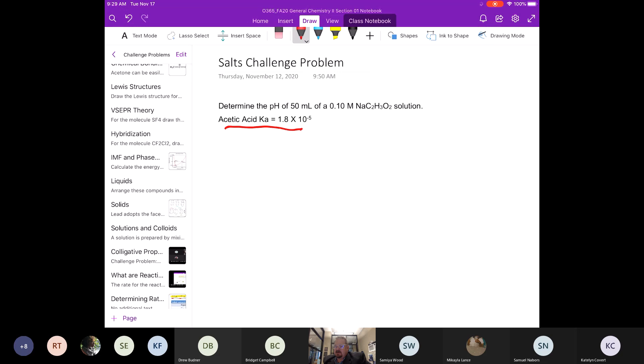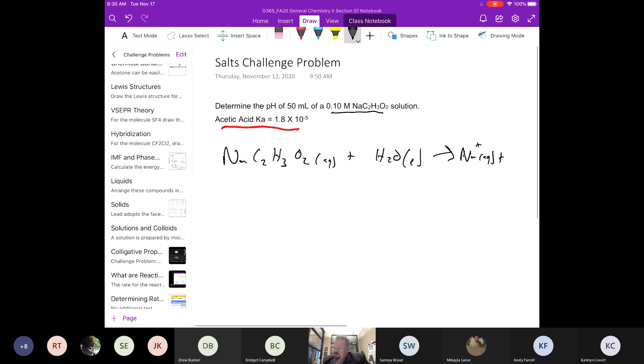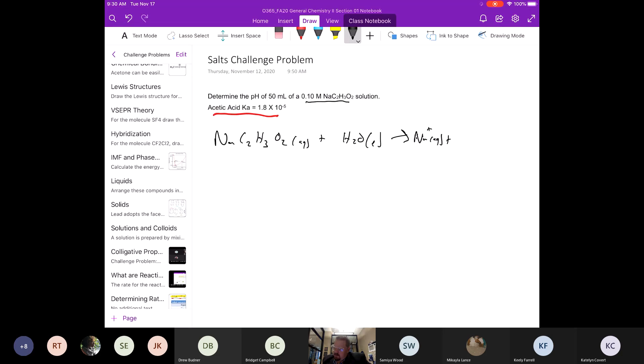If we look at putting this into solution, if we take that and put it into solution, we're going to have NaC2H3O2. When it goes into solution, put it with the water, for example, it's going to dissolve because most acetates are soluble and all alkali metals are soluble.